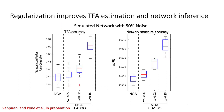To test the effectiveness of the regularization parameter, we tested on a simulated network with known transcription factor activities. With the introduction of the regularization parameter, we see that the accuracy of both the transcription factor activity estimation and the network structure is improved when an initial prior noise is given. We have used regularized NCA in conjunction with the MERLIN-P algorithm to produce an inferred GRN network for Aspergillus fumigatus.